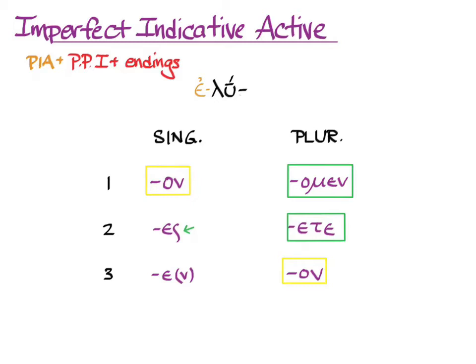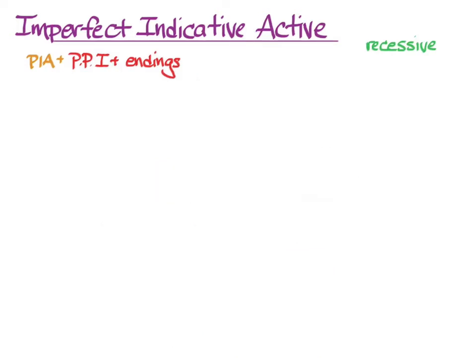Accent on most Greek verbs is recessive, and that's the case here. The default translation for the imperfect indicative active is, she was verbing for past time and continuous aspect. She used to verb or she kept verbing could also be good choices depending on the context. So let's put this together. Augment plus principal part one plus the endings and recessive accent. We need a chart to put them in.